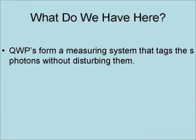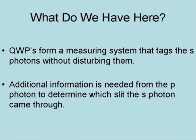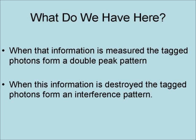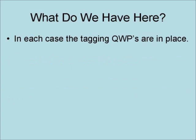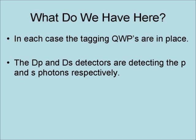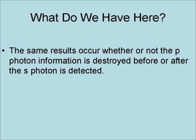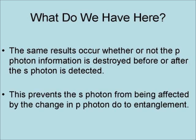What we have here is that the QWPs tag the S photon without disturbing it, and additional information from the P photon is needed to determine which slit the S photon came through. When that information is measured, the tagged photons form a double peak pattern; when it is destroyed, they form an interference pattern — in each case with the tagging QWPs in place and both DP and DS detectors active. The same results occur whether the P photon information is destroyed before or after the S photon is detected, preventing entanglement from explaining the effect.